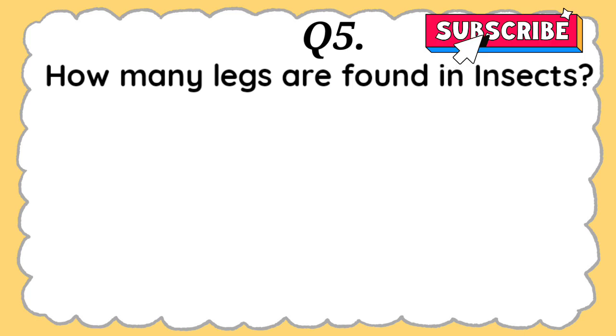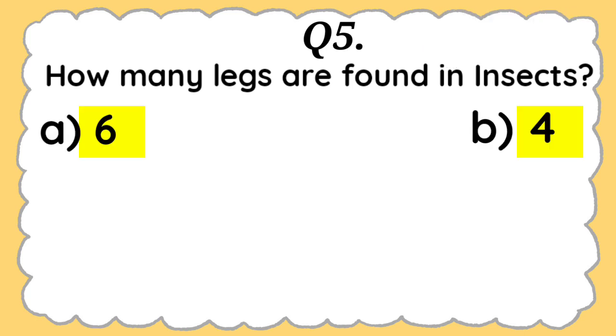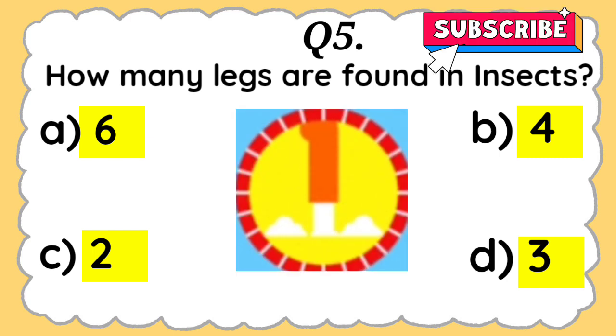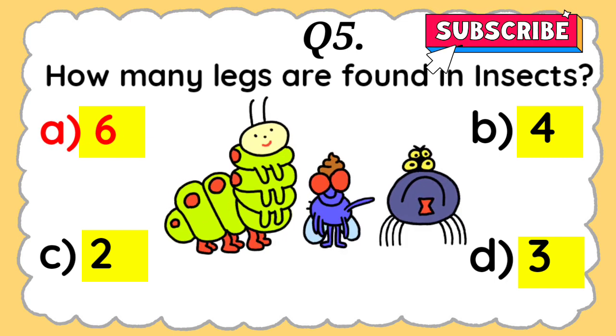Question 5: How many legs are found in insects? Six, Four, Two, or Three. And the answer is six. Insects have six legs.